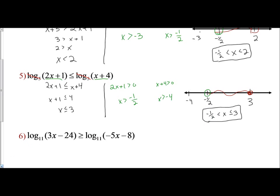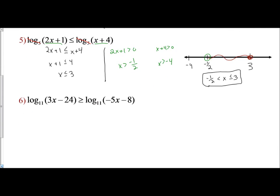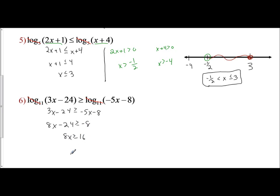Lastly, we have log base 11 of 3x minus 24 is greater than or equal to log base 11 of negative 5x minus 8. We have the same log, so we can ignore it and work with: 3x minus 24 is greater than or equal to negative 5x minus 8. Add 5x to get 8x minus 24 is greater than or equal to negative 8. Add 24: 8x is greater than or equal to 16. Divide by 8: x is greater than or equal to 2.